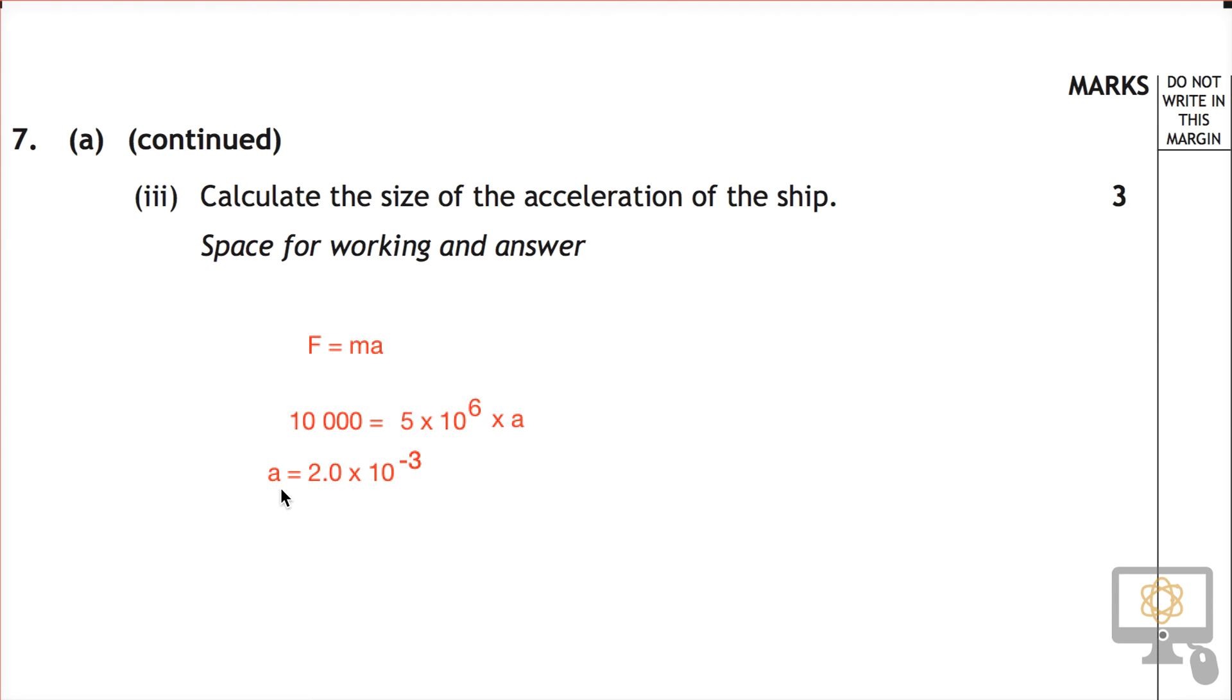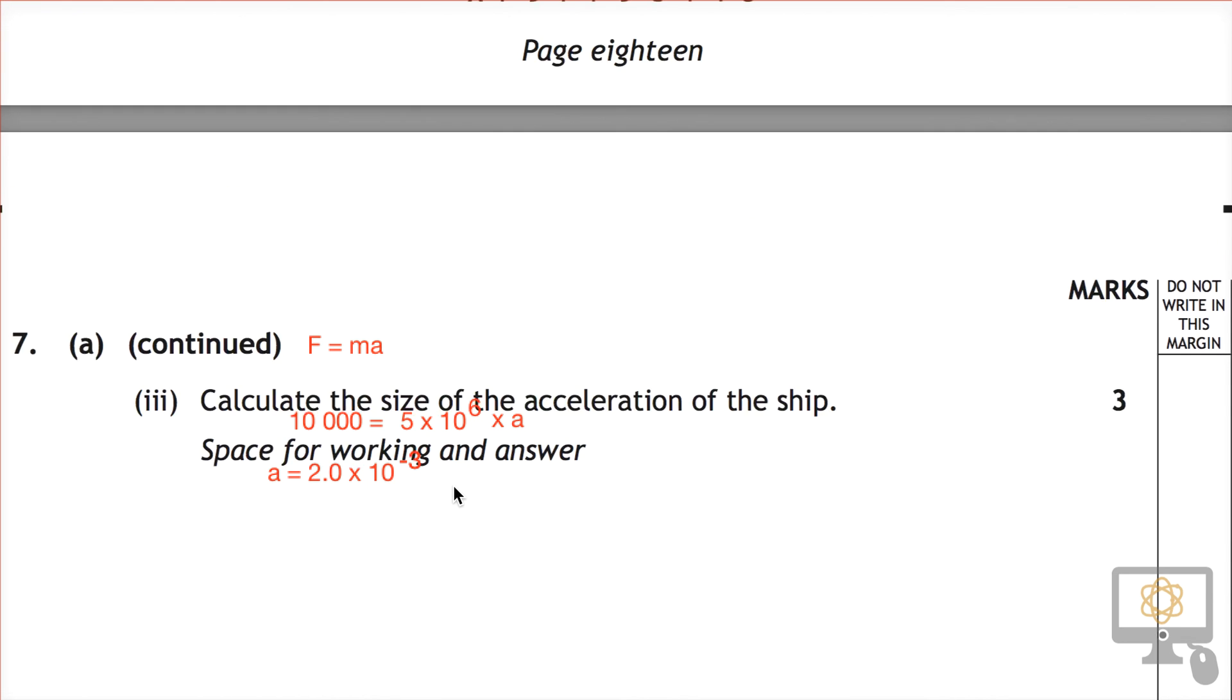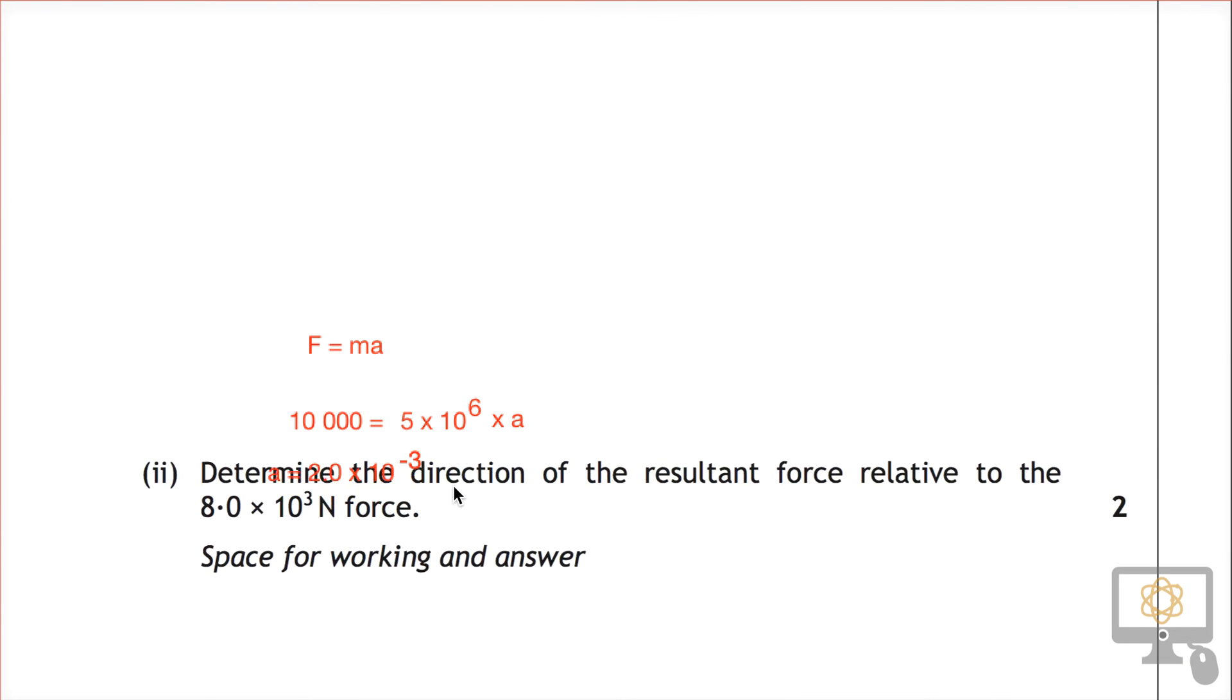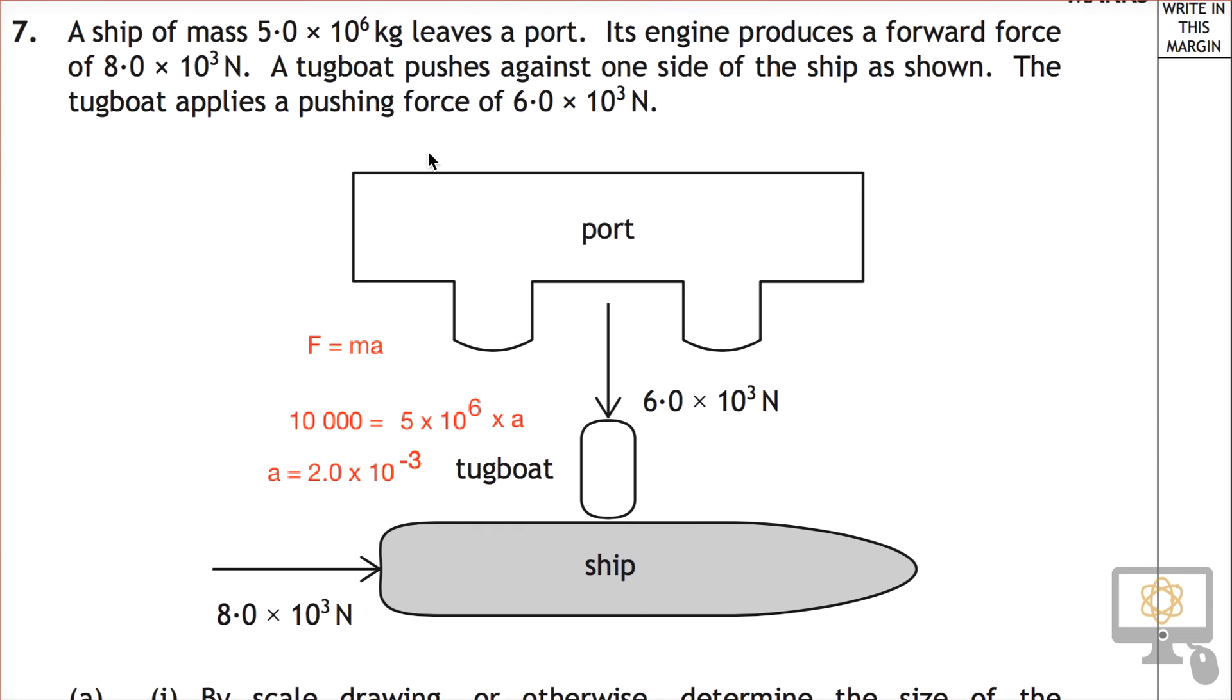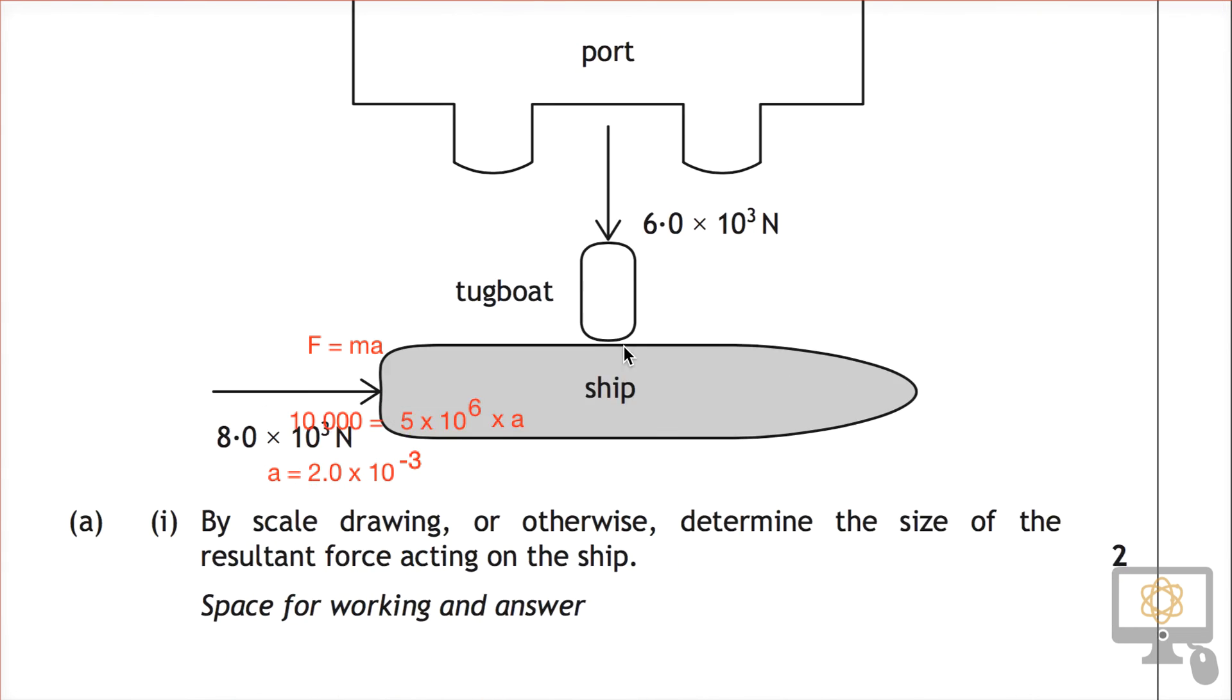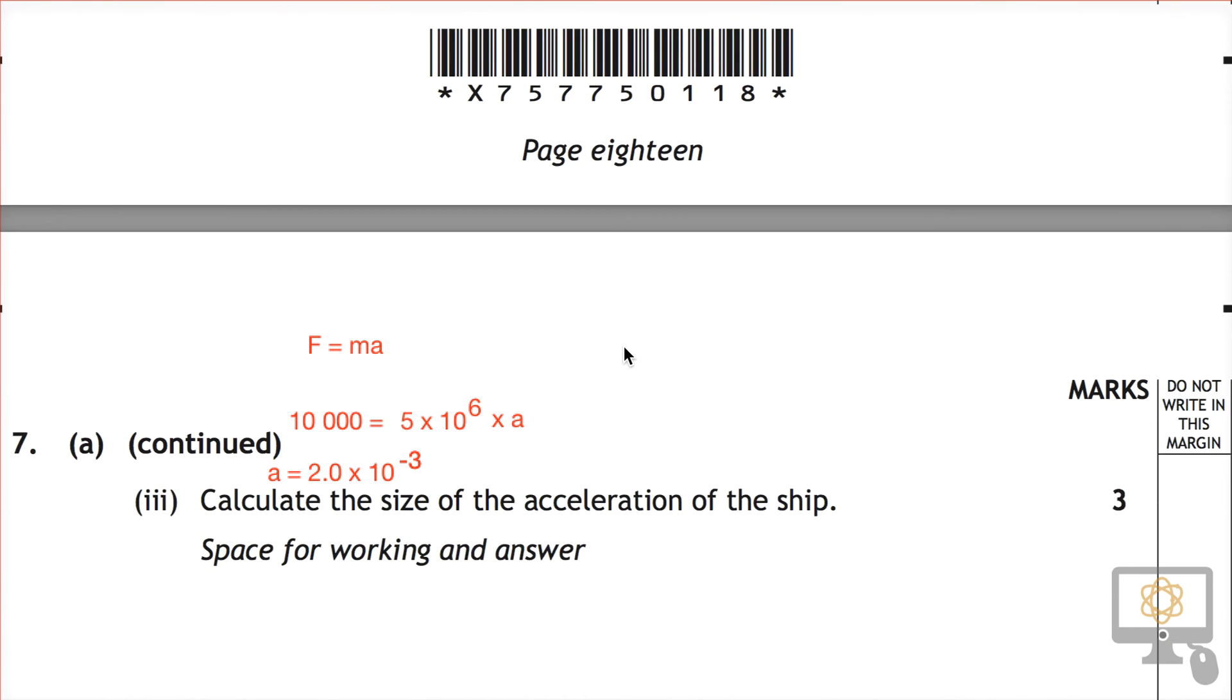So there's our answer. The acceleration is 2.0 times 10 to the minus 3. First of all, we say 2.0 because everything else in the question is two significant figures. That's two significant figures, and the mass is also two sig fig. So our final answer, we gave to two sig fig.